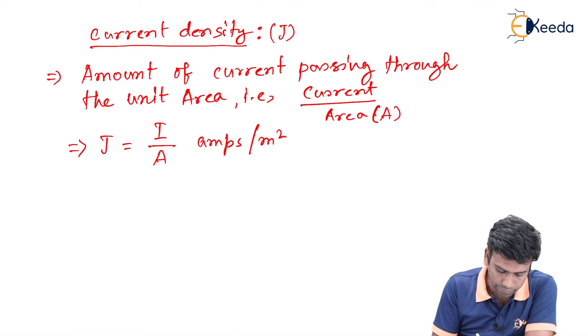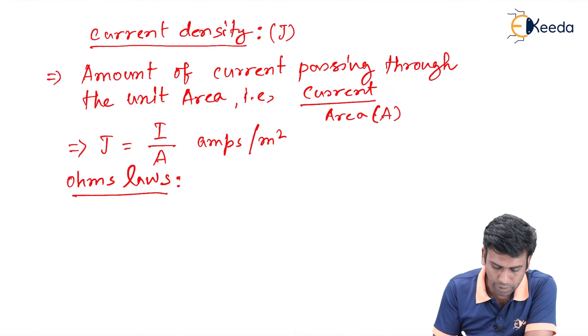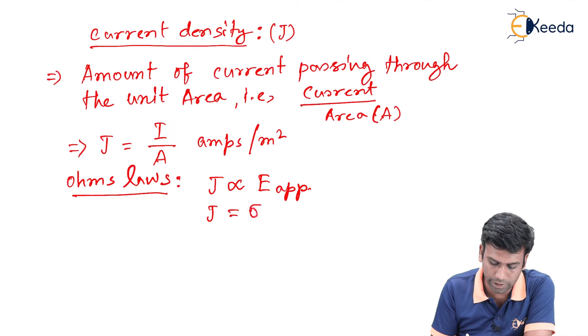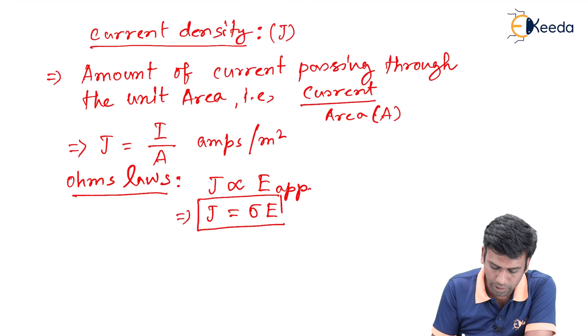Similarly, from Ohm's law, we can also write that the current density J is proportional to the applied electric field. So if we make it as equals to, then there will be a constant that is denoted as the conductivity of the material. So ultimately, we will get J equals sigma E. This J equals sigma E equation is called Ohm's law for the semiconductors.